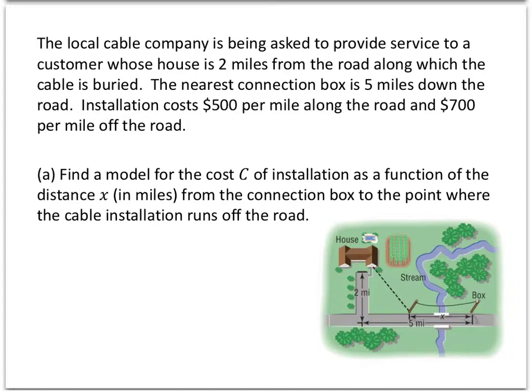So let's try to understand what this is all talking about. So the cable company needs to draw cable along the road from the box to some point here and then on the ground from that point up to the house. So there's two pieces of cable that need to be run. And the cable over here along the road, that's the part that costs $500 per mile. And the part on the ground, that's the part that costs $700 per mile.